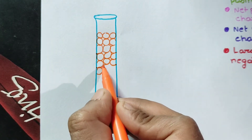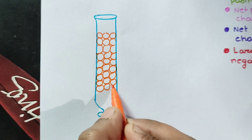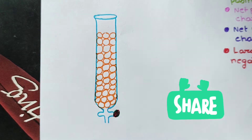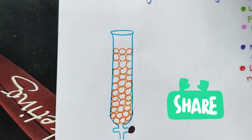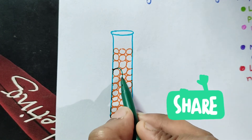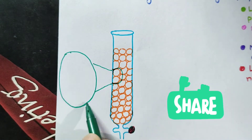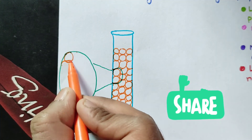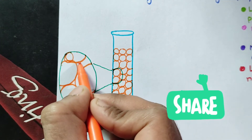Resins are surrounded by charged groups. The opposite charged protein interacts with the opposite charged resin. In this example, the resins are surrounded by a negatively charged group. That is why the resins are called a cation exchanger, or this is called cation exchange chromatography.